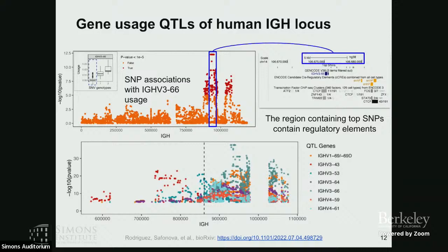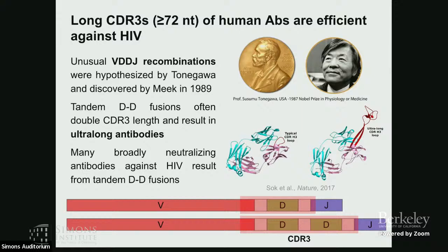We also saw many regulatory elements that modulate the three-dimensional architecture of the locus, creating an additional level of complexity. We need to understand not only how specific genes respond to specific pathogens but also how it is all orchestrated together. When we extended this analysis to other genes, we saw that the same region controls the production of many other genes — for example, IGHV1-69, associated with flu, is also controlled by this region.